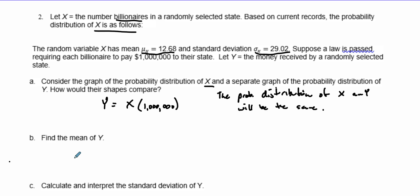To find the mean of Y, we take the mean of X and multiply by 1 million. So we have 12.68 times 1 million, which equals 12.68 million dollars. This is approximately how much money is received by a randomly selected state.